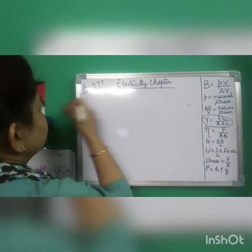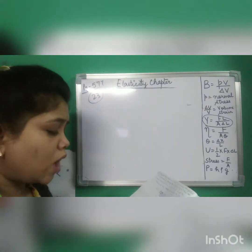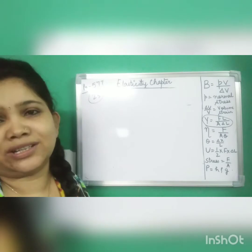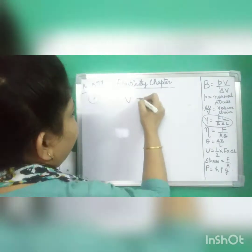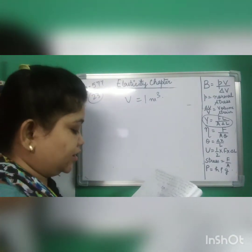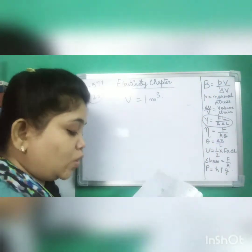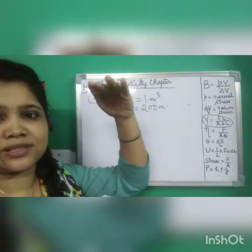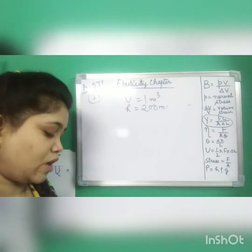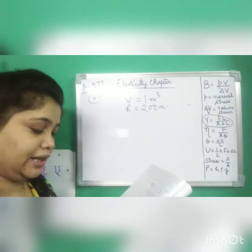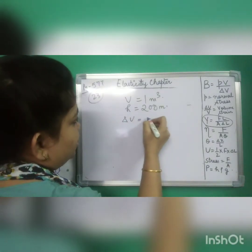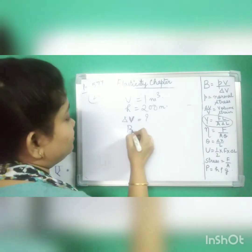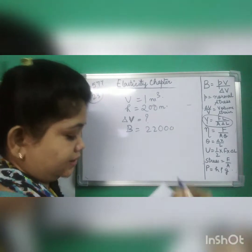Sum 23: 1 m³ of water (so volume V = 1 m³) is taken from the surface of a lake to a depth of H = 200 m. Note: the unit m³ tells you it's volume even if not explicitly labeled. Find the change in volume ΔV. Bulk modulus is given as 22000 atmospheres. Since the problem is about a liquid, we will need the pressure formula P = Hρg.